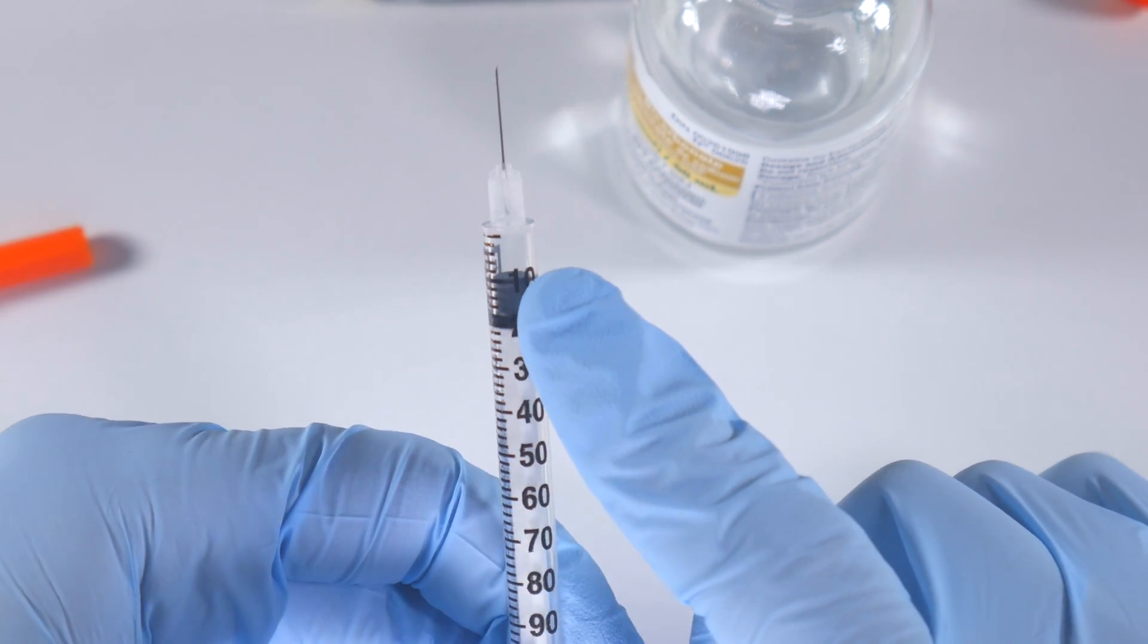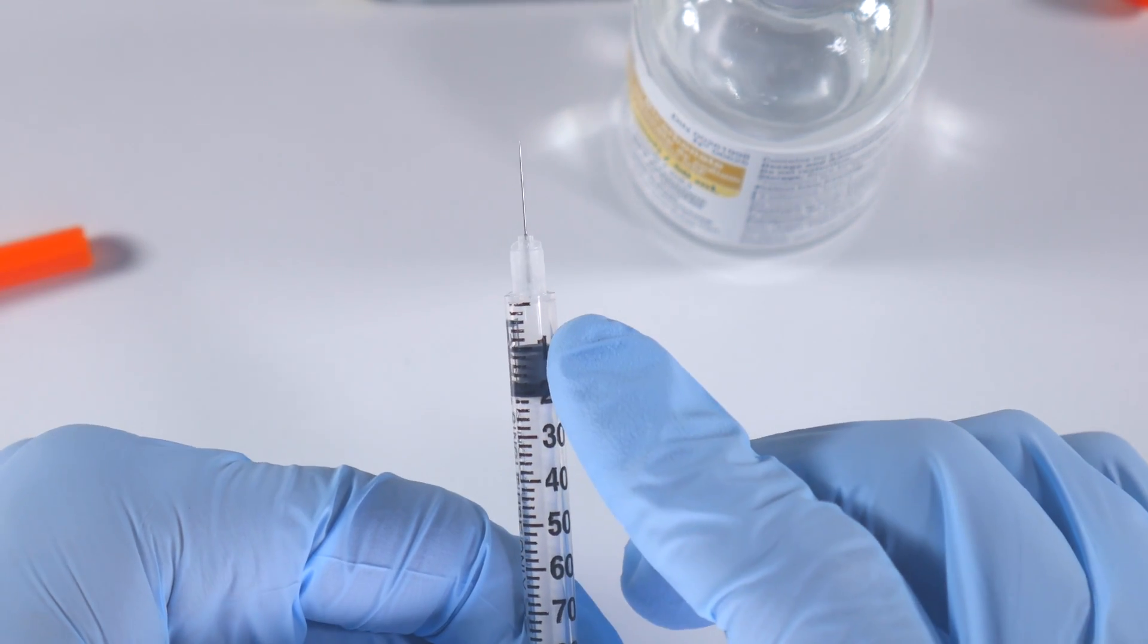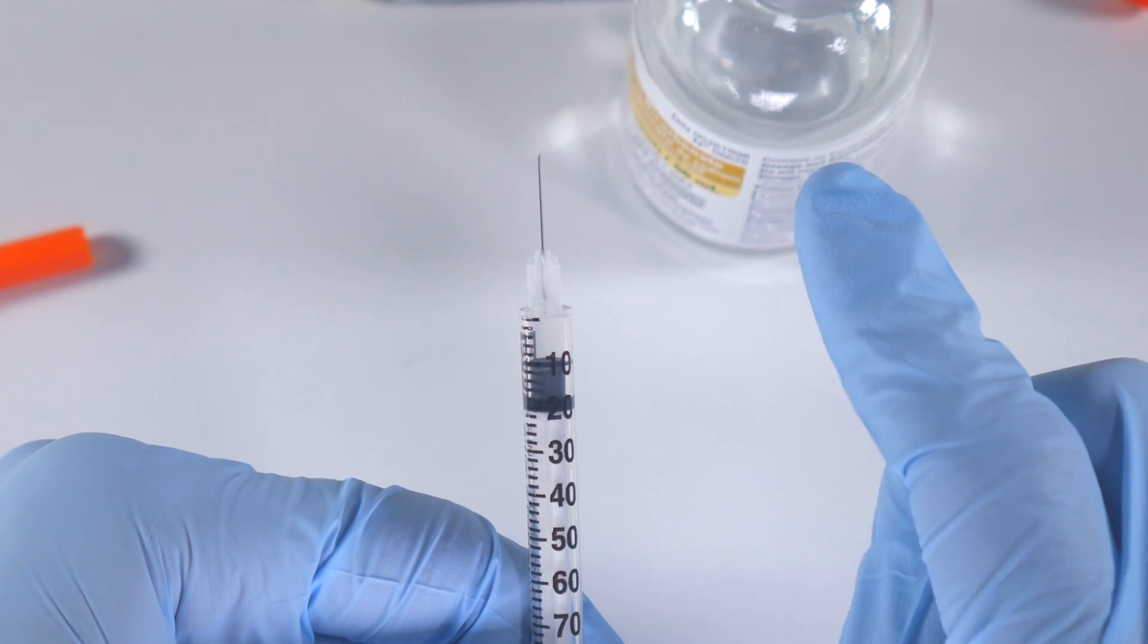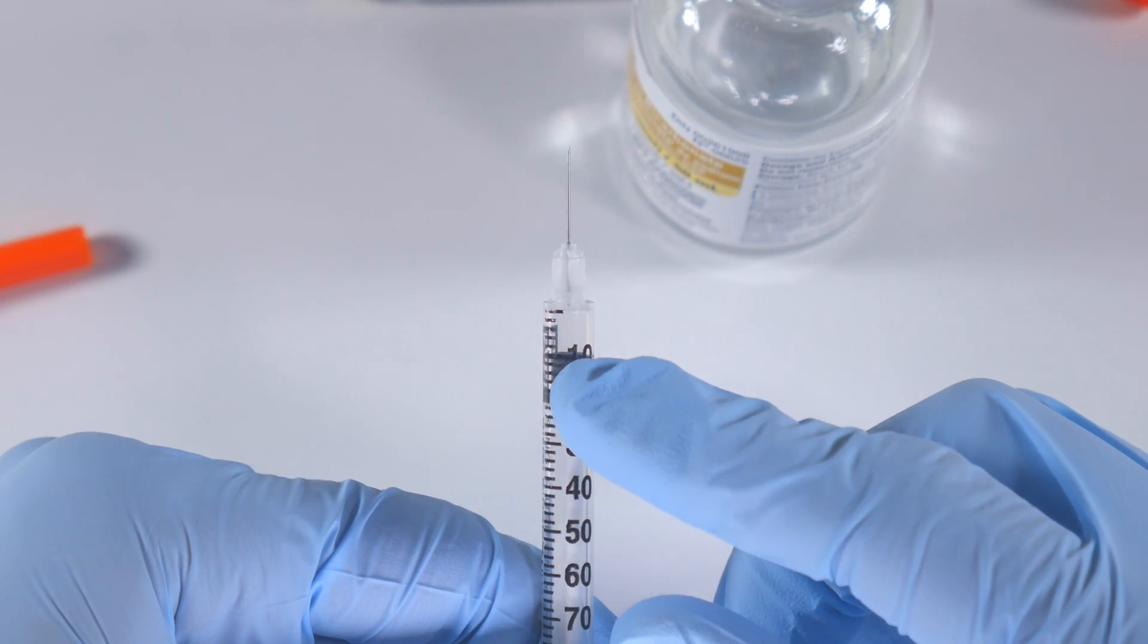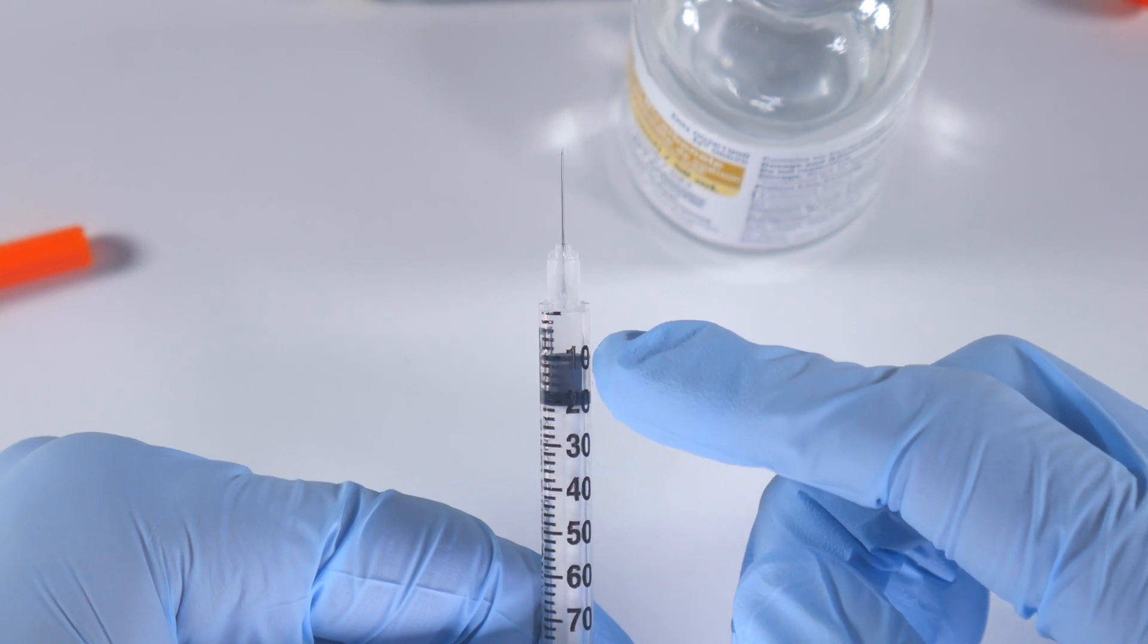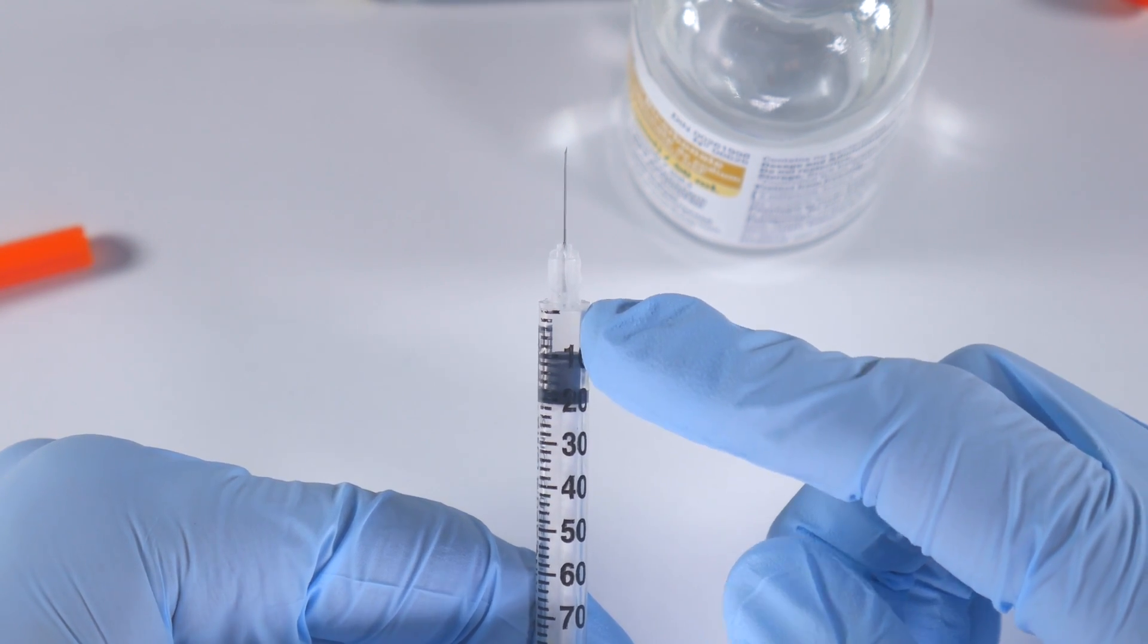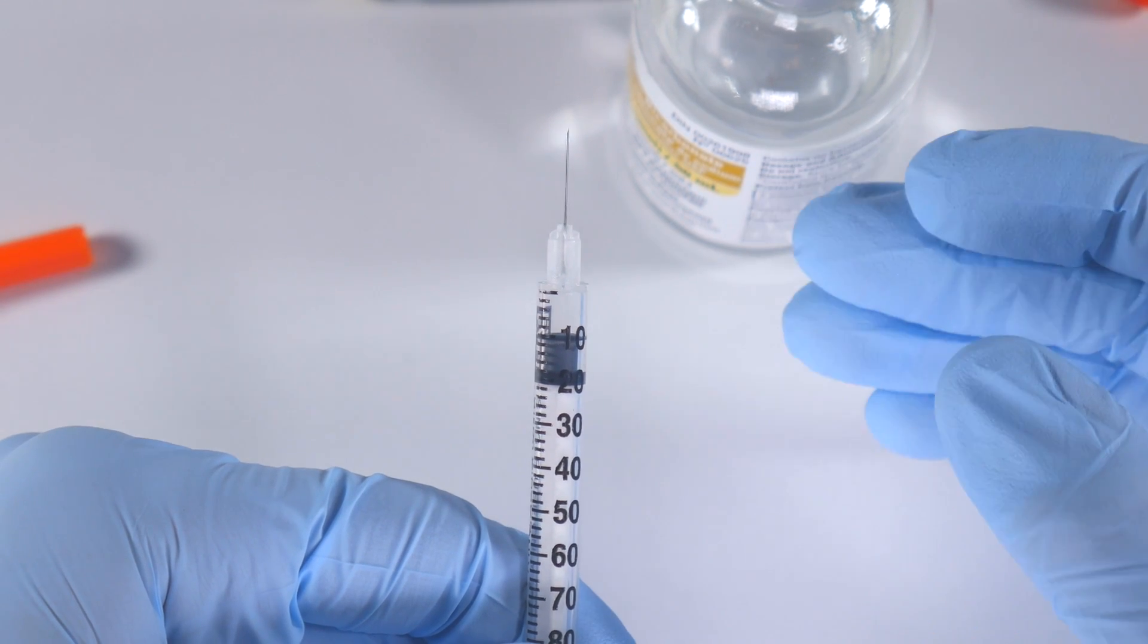So once you draw that back, you're going to then take this, express the air into the vial, and then you're going to draw back again to the 10 on the syringe, which allows you then to ensure that you've avoided any air in the syringe. When you draw back the solution, the sodium bicarbonate, it's not going to have any bubbles within it.